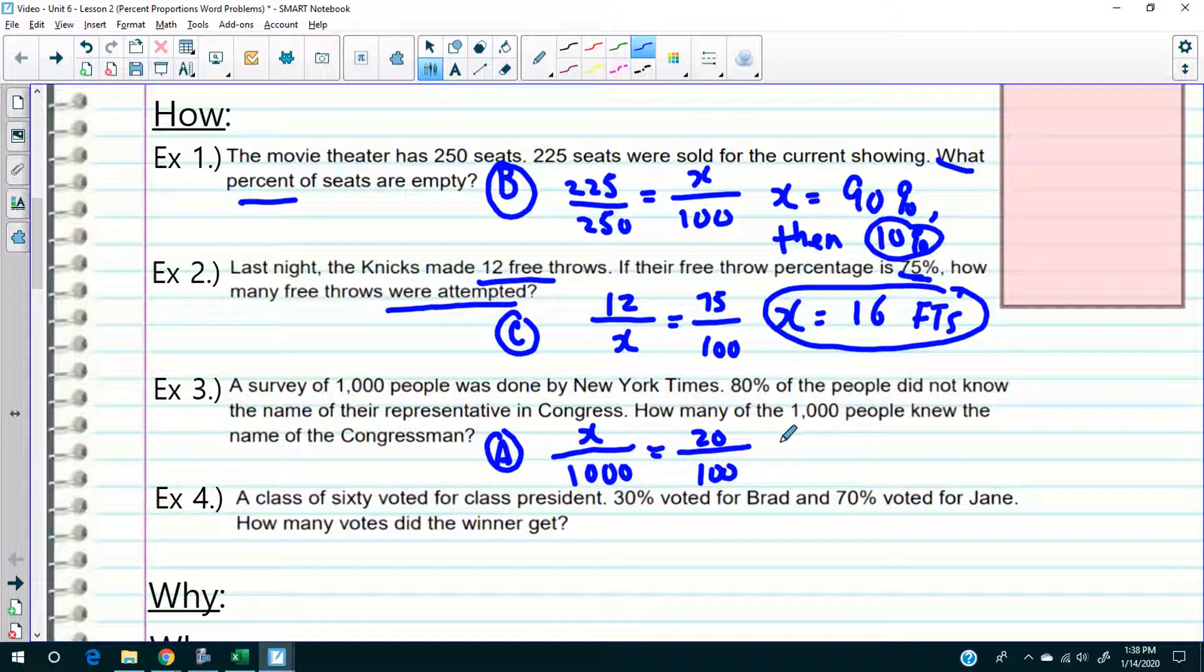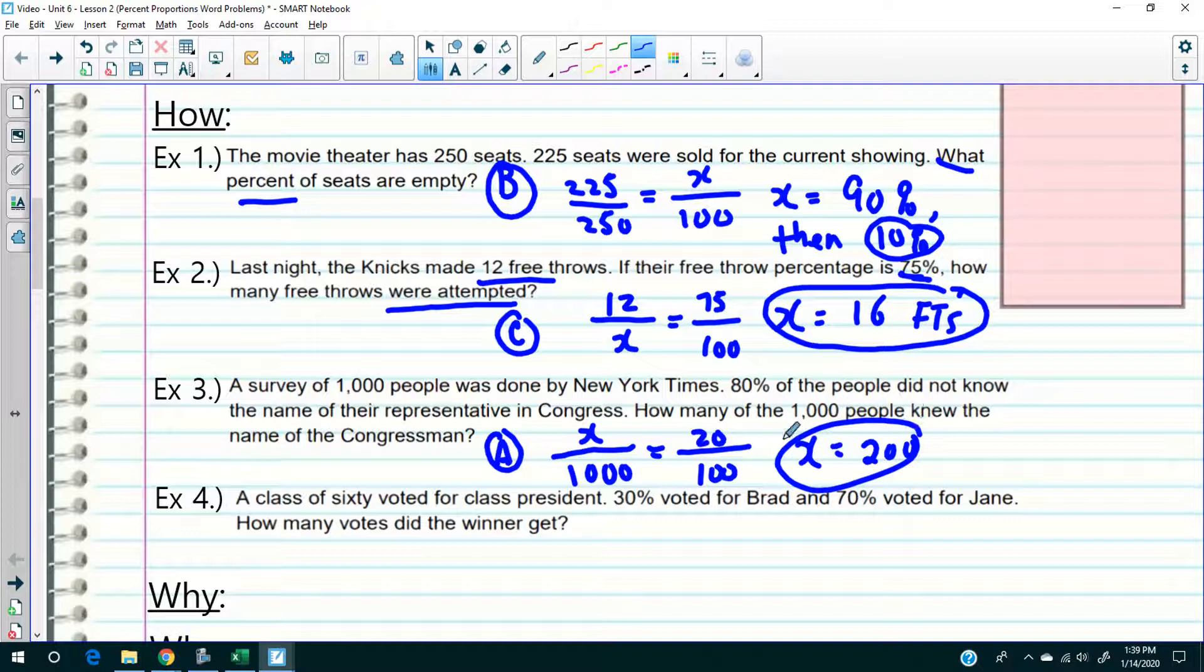This is a type A. So 20% of the people knew their congressman, which is a thousand. So how many of them are there? Let's see. 20 times a thousand divided by 100, so 200. So 200 people out of the thousand, 200 people knew their congressman, which is 20%, which means 80% of the people didn't know.